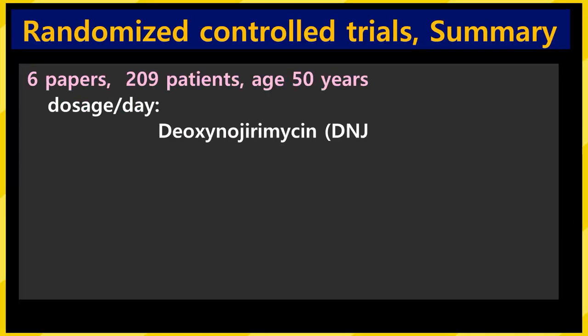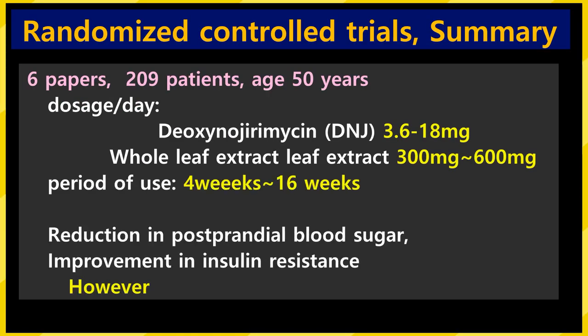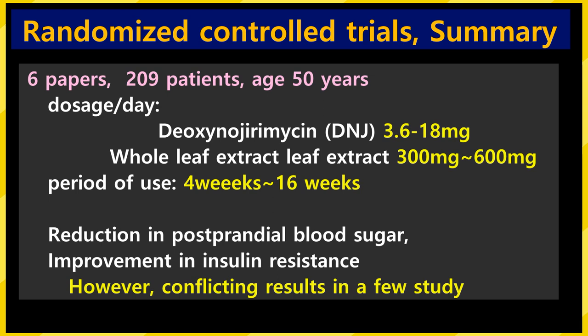Let's summarize the results of six controlled trials: 209 diabetic patients, average age 50 years. Daily dose: when using DNJ, 3.6 to 18 mg; when using powder extract from whole leaves, 300 to 600 mg, taken for 4 to 12 weeks. Results show post-prandial blood sugar dropped and insulin resistance improved. However, no effect on fasting blood glucose or HbA1c was found. The evidence is still lacking, and more research is needed.